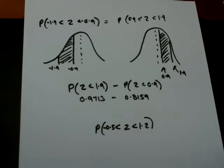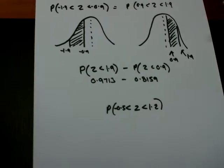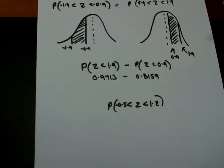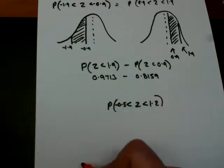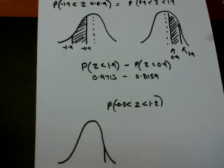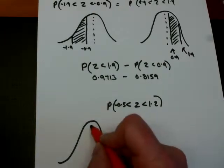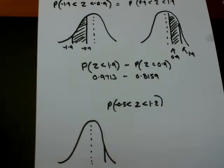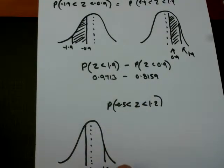Now we're on to the last possibility that you might come across. So we'll look at that finally. So what's the probability that I'm less than a positive value and greater than a negative value that's not the same? So 0, 1.2 and minus 0.5.